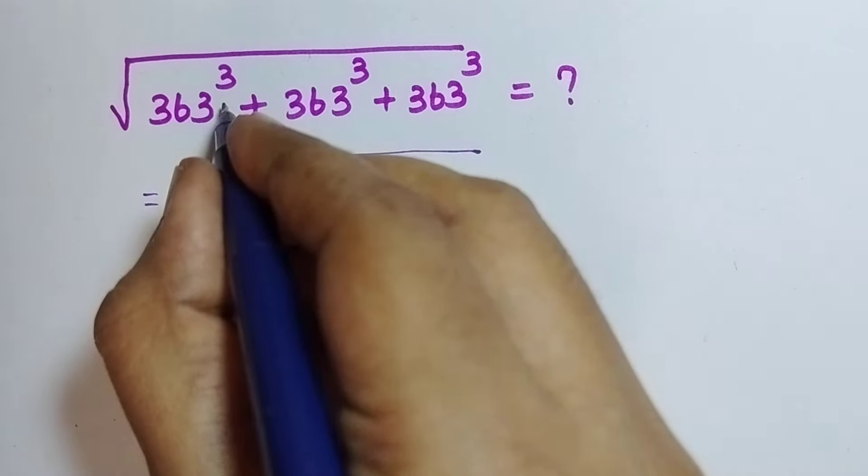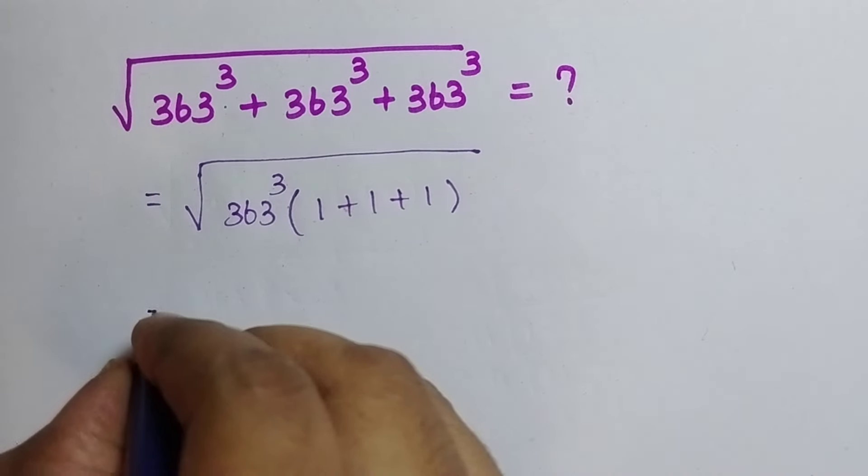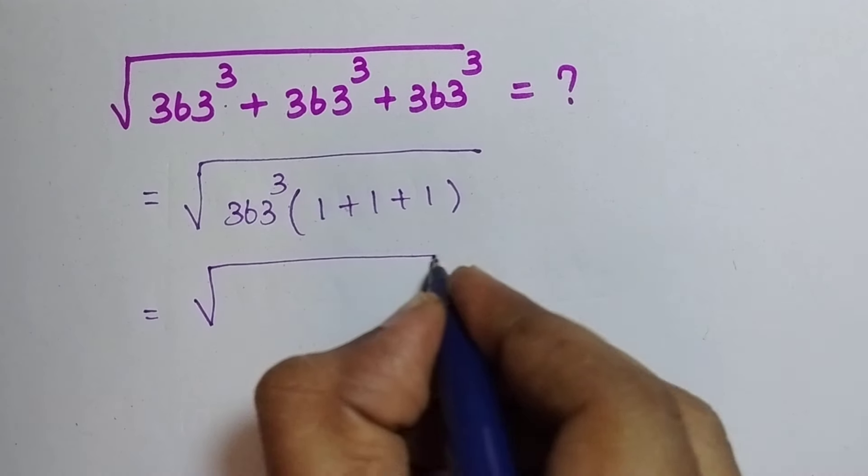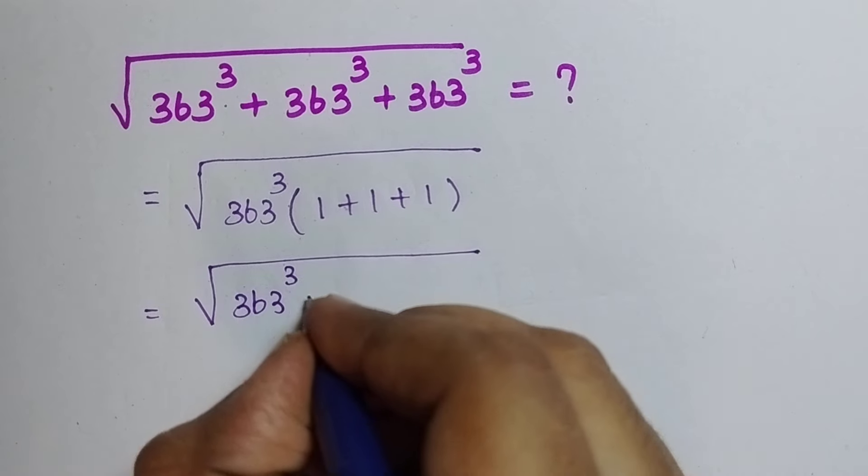So, if I take out, here remain 1, 1, 1. So, 1 plus 1 plus 1. This is equal to the square root of 363 the whole cube into 3.